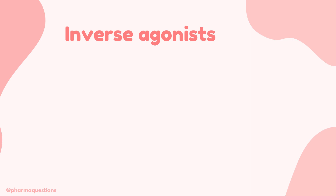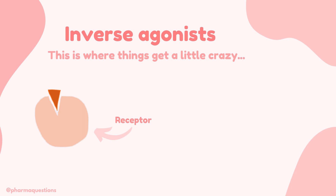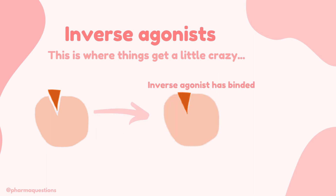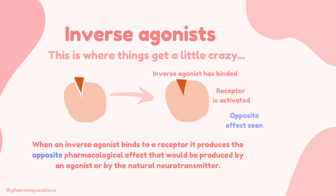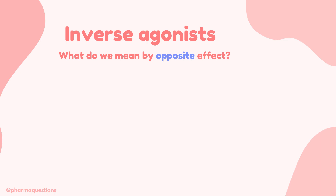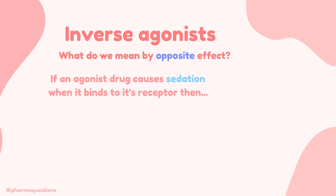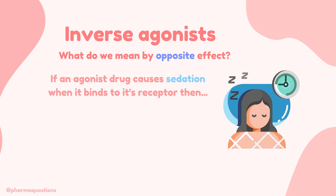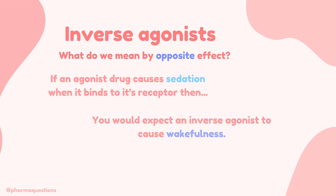Last but not least, let's take a look at inverse agonists — and this is where things get a little crazy. Here we have the receptor and an inverse agonist waiting to bind. When the inverse agonist has bound, the receptor gets activated. However, the opposite pharmacological effect that would normally be produced by an agonist is seen. For example, if an agonist drug causes sedation when it binds to its receptor, then an inverse agonist would cause wakefulness when it binds to its receptor.